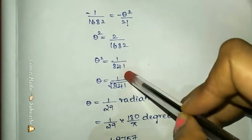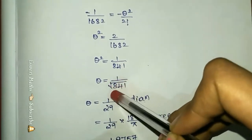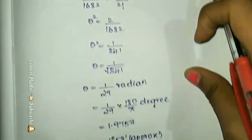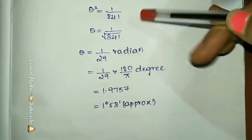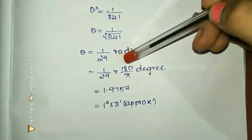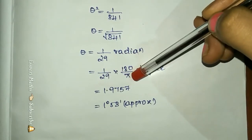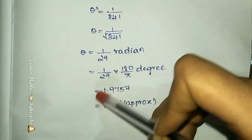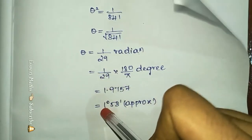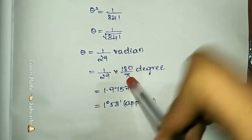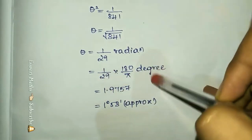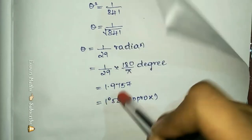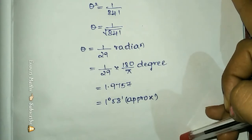Taking the square root, theta equals 1 by the square root of 841, which is 1 by 29. We multiply by 180 by pi to convert to degrees, giving approximately 1.9757 degrees. The integer part means 1 degree, and the decimal 0.9757 multiplied by 60 gives approximately 58 minutes. So 1 degree is about 58 minutes.